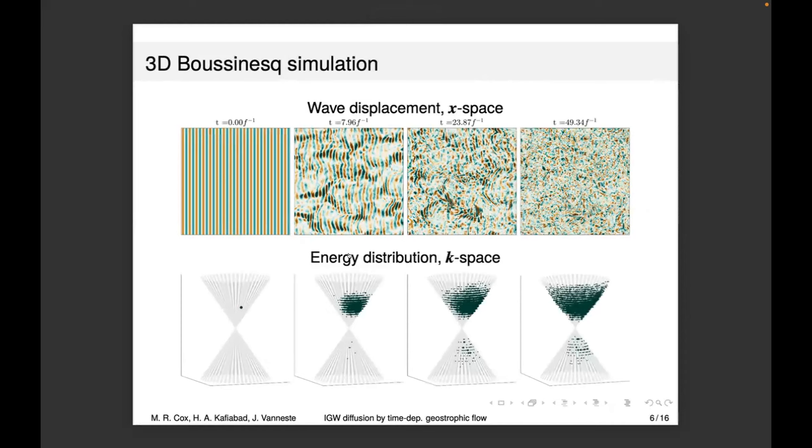At the top, you've got snapshots from the simulation. You can see the plane wave breaks down as it's scattered by the flow. In k-space, the energy starts as a single point—the single wavelength of the wave initially. As it's scattered, the energy spreads along the cone. This is a 3D Boussinesq simulation. You can see it's spreading along the cone but not really spreading much across it, so the time independence assumption seems well justified.